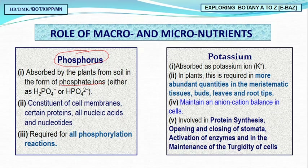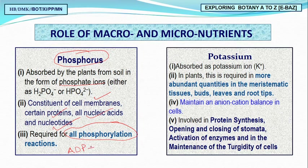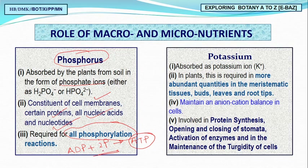Phosphorus is absorbed through phosphate ions and is a very important constituent of the cell membrane, certain proteins, nucleic acids, and nucleotides. It is required for all phosphorylation reactions — for example, ADP + inorganic phosphate (Pi) forms ATP (adenosine triphosphate), which is the energy currency of the cell.